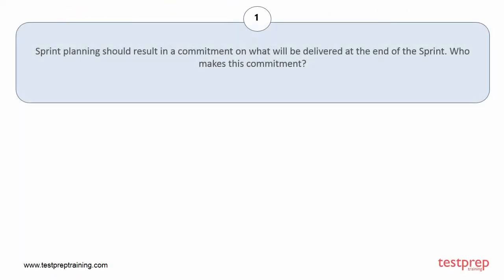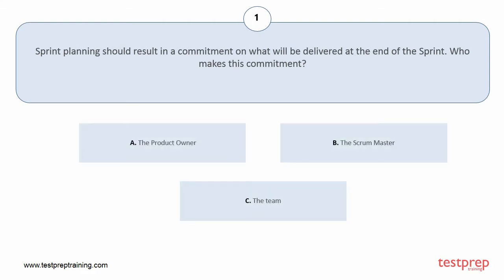Question number 1: Sprint planning should result in a commitment on what will be delivered at the end of the sprint. Who makes this commitment? Your options are: A, the product owner; B, the scrum master; C, the team. The correct answer is option C.